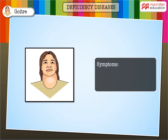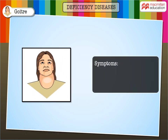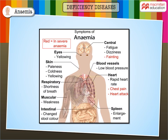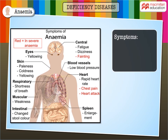Goiter is caused due to the deficiency of iodine. A person suffering from goiter becomes weak and lethargic, and in extreme cases one develops swelling in the neck area. Affected persons should add iodized salt in their diet.